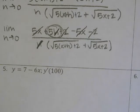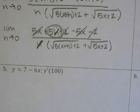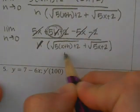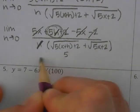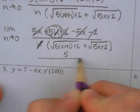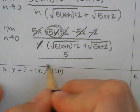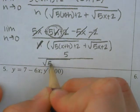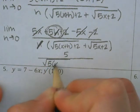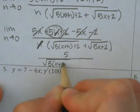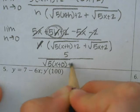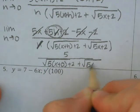So what I'm going to do is ditch my limit notation because I'm about to plug 0 in for h. So I've got the 5 on the top, and then on the bottom I have square root of 5(x+0)+2 plus square root of 5x+2.